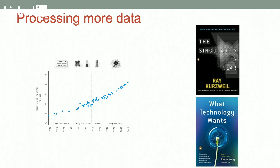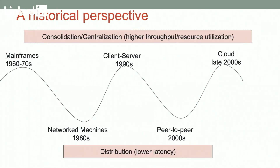And if we want to understand where the cloud is going, it might be following the same pattern. But what is interesting is that the technologies that allowed us to process more are changing. If we just focus on the last 50 and 60 years in computing and observe the computing paradigms, we see that from mainframes to network machines all the way to the cloud now, there are two forces in play: a force of consolidation and a force of distribution.